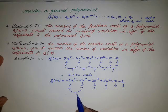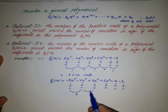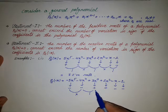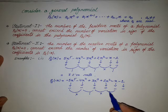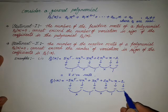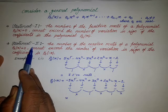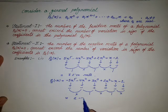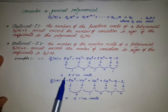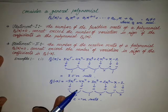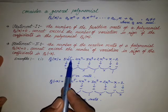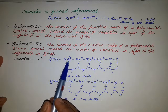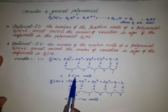There is no variation from the first to second term. There is a variation from second to third (negative to positive): one negative root. No variation from third to fourth. There is a variation from fourth to fifth (positive to negative): one more negative root. No variation in the last term. So by statement two, we have two negative roots. Since the degree is five, the total is three positive plus two negative equals five roots.